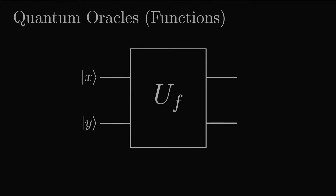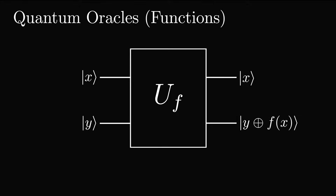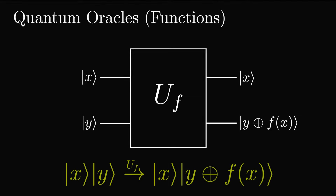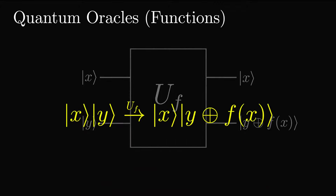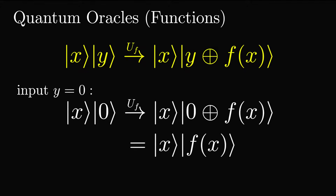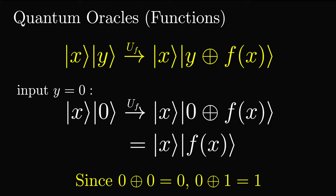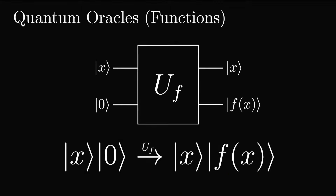We use this same technique when making quantum oracles. A standard quantum oracle looks like this, where we input x and y — x being the input to the function, and y being the target qubit to write the answer to. We then output x as well as y exclusive ORed with f(x). This ensures the oracle is reversible. The oracle acts on the state |x, y⟩ and turns it into |x, y ⊕ f(x)⟩. If we input y as 0, then the rightmost qubit becomes f(x), since 0 ⊕ f(x) always returns f(x). So in the case where y equals 0, the oracle transforms |x, 0⟩ into |x, f(x)⟩, and measuring the rightmost qubit gives us f(x).